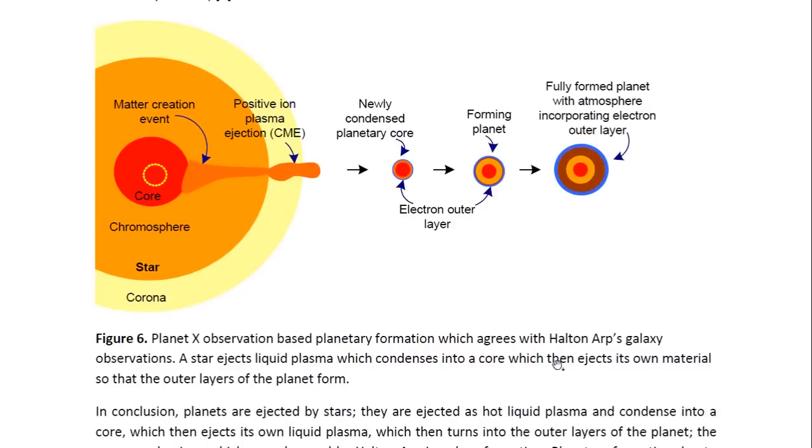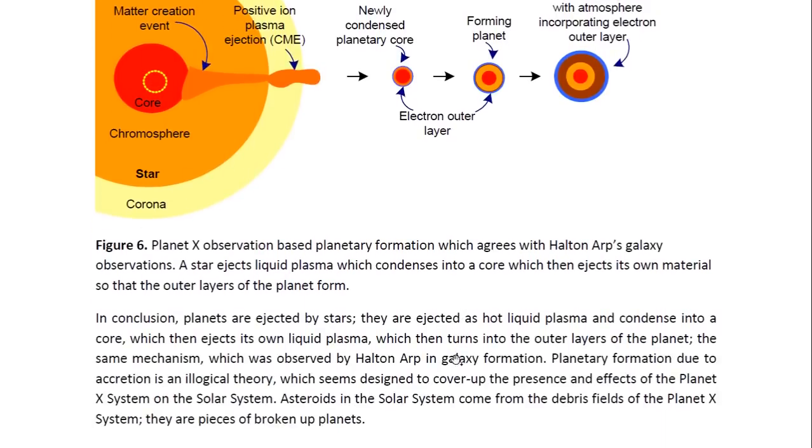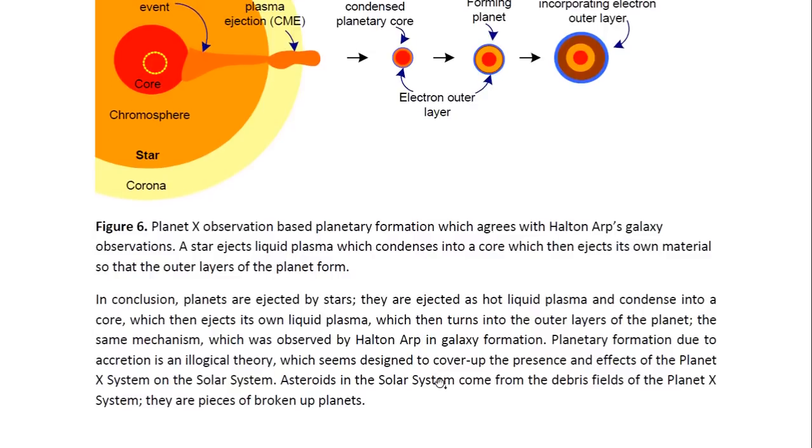And so, you end up with a planet that has formed from the inside outwards. And it agrees with Halton Arp's observations of galaxies, which go through exactly the same type of formation. So, in conclusion, planets are ejected by stars. They are ejected as hot liquid plasma and condensed into a core, which then ejects its own liquid plasma, which then turns into the outer layers of the planet.